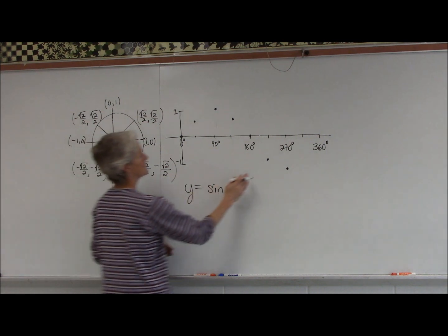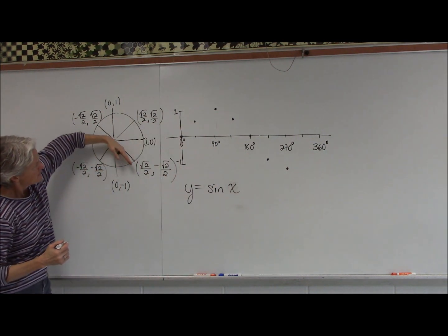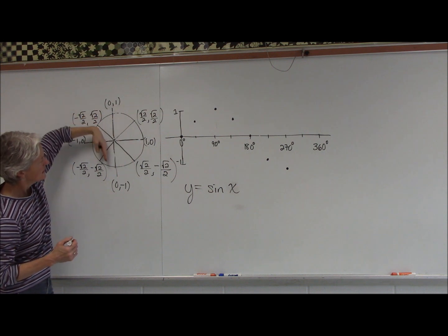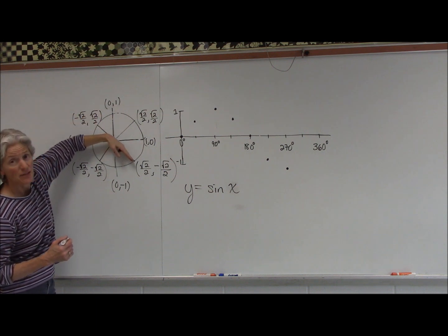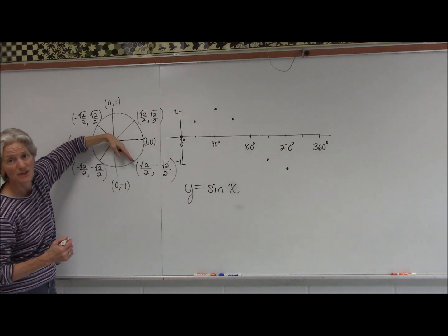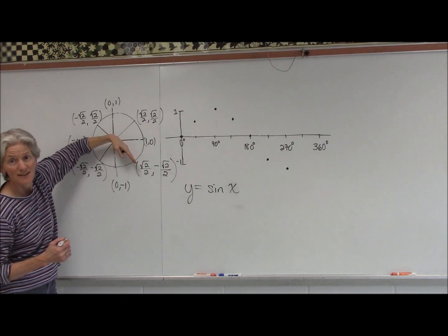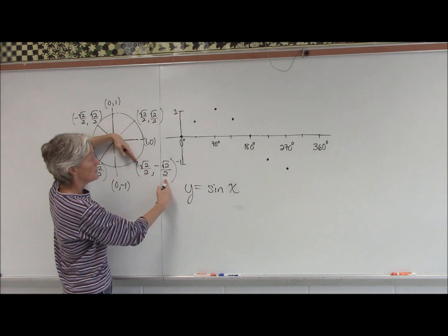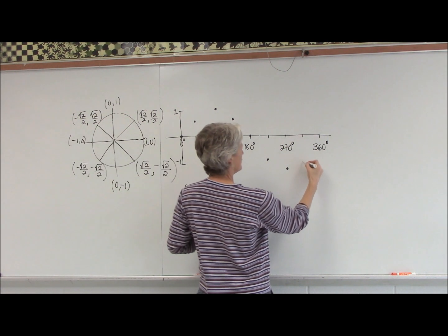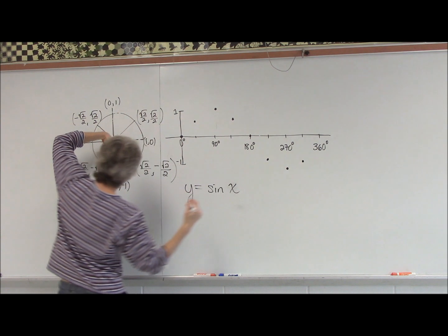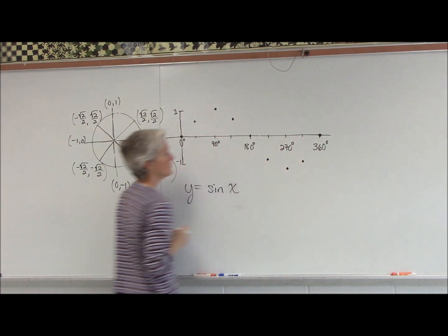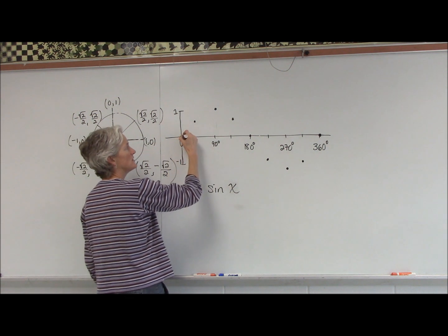but we can get the idea. Sine of 315 degrees—sine is your y—so negative square root of 2 over 2 again. And all the way around to 360 degrees, back to a sine of zero. And there's my sine curve.